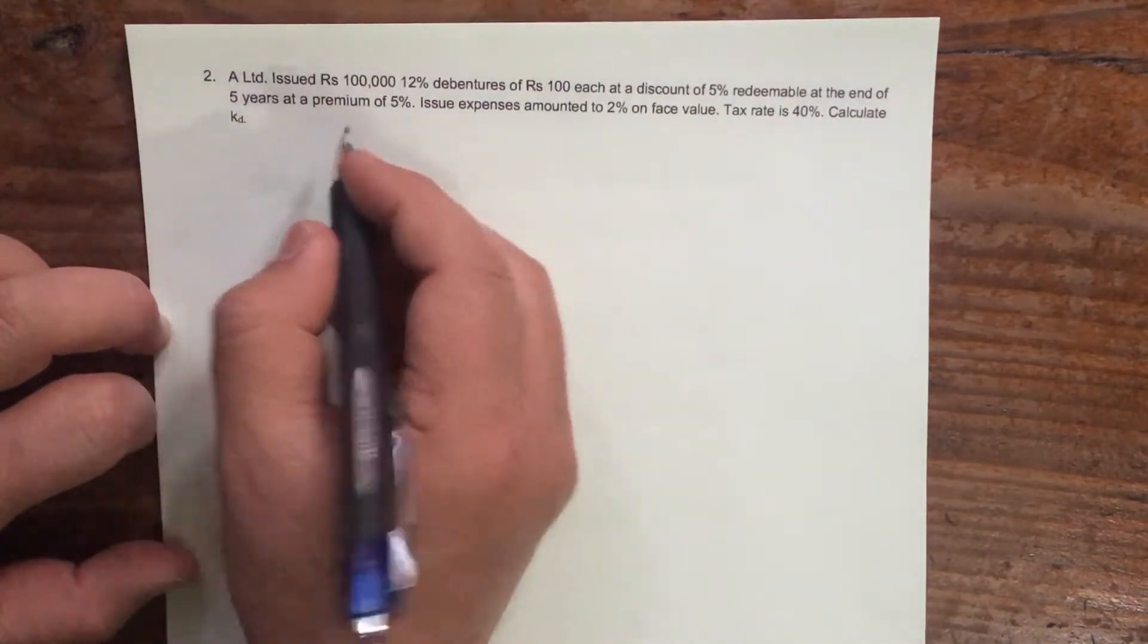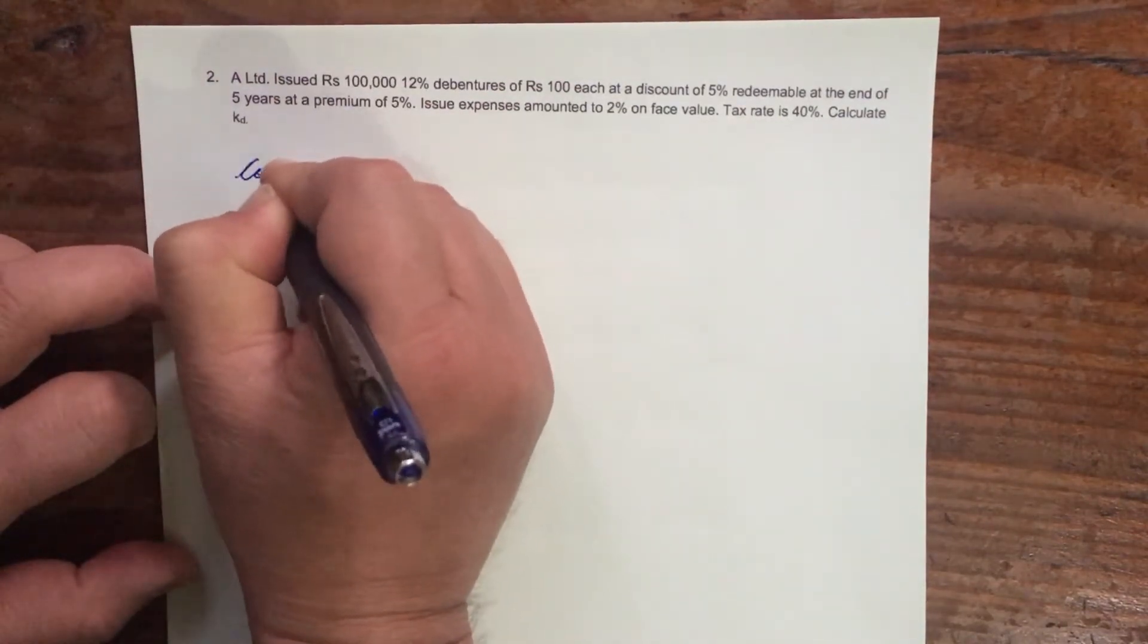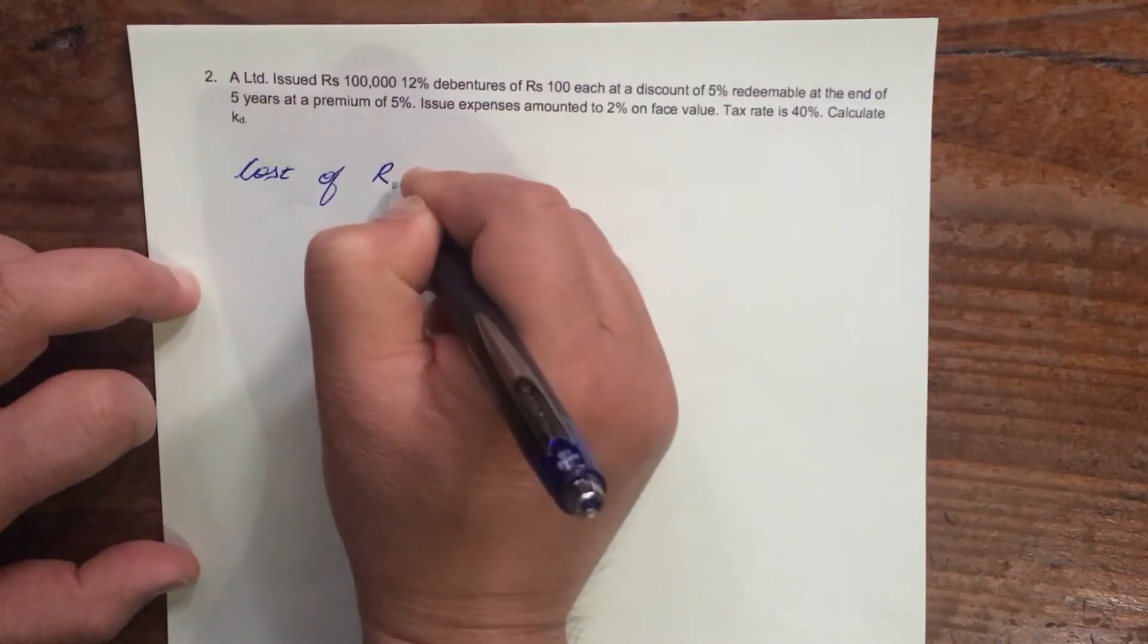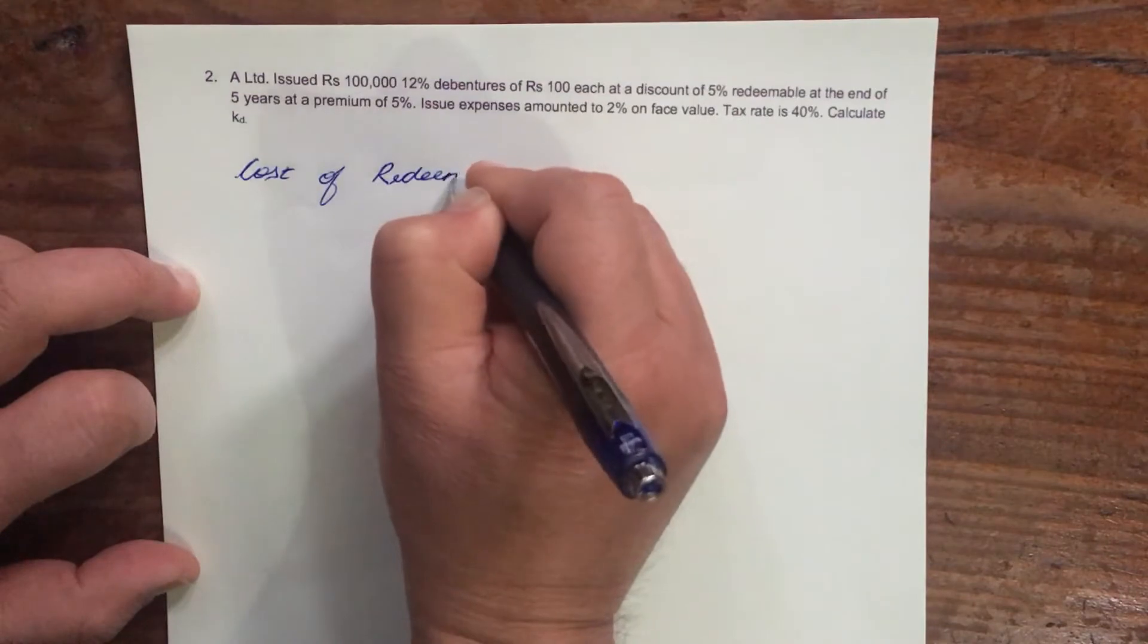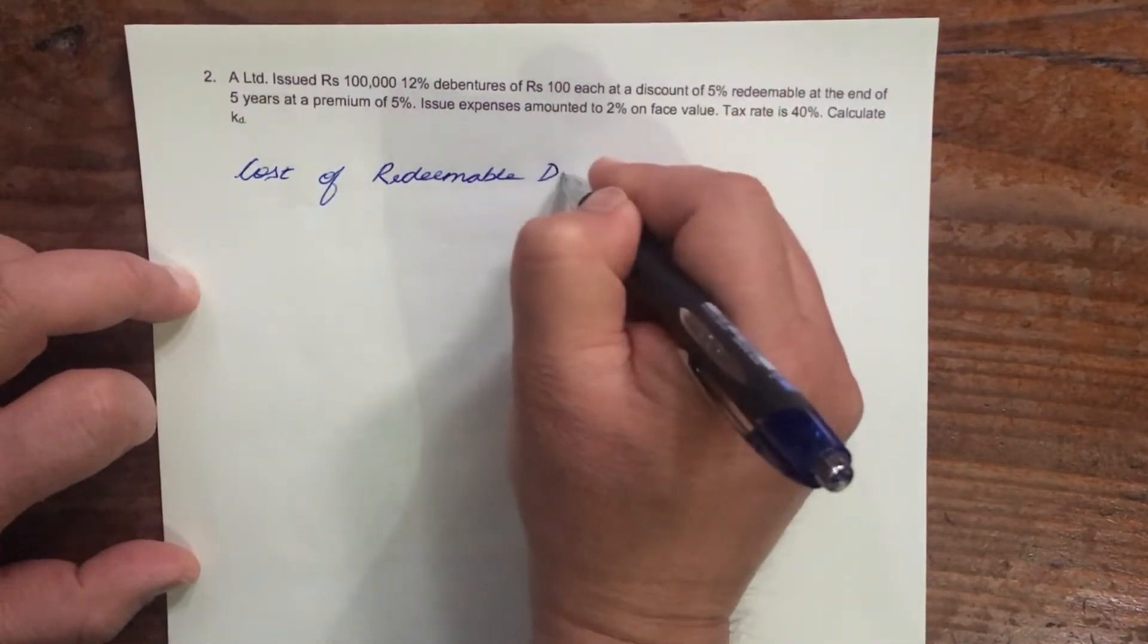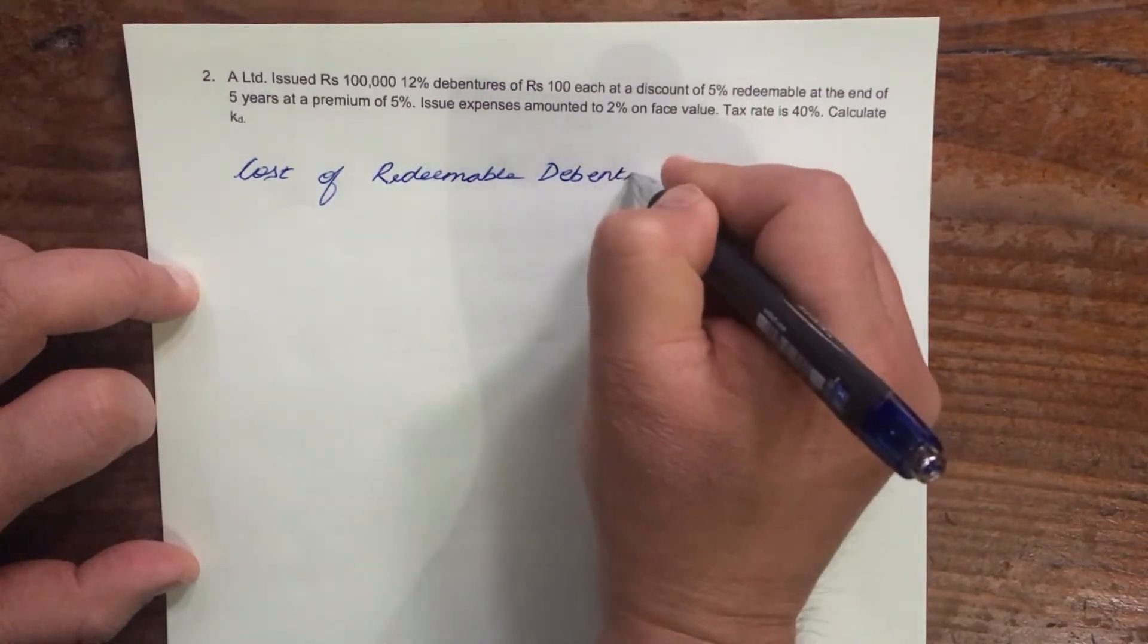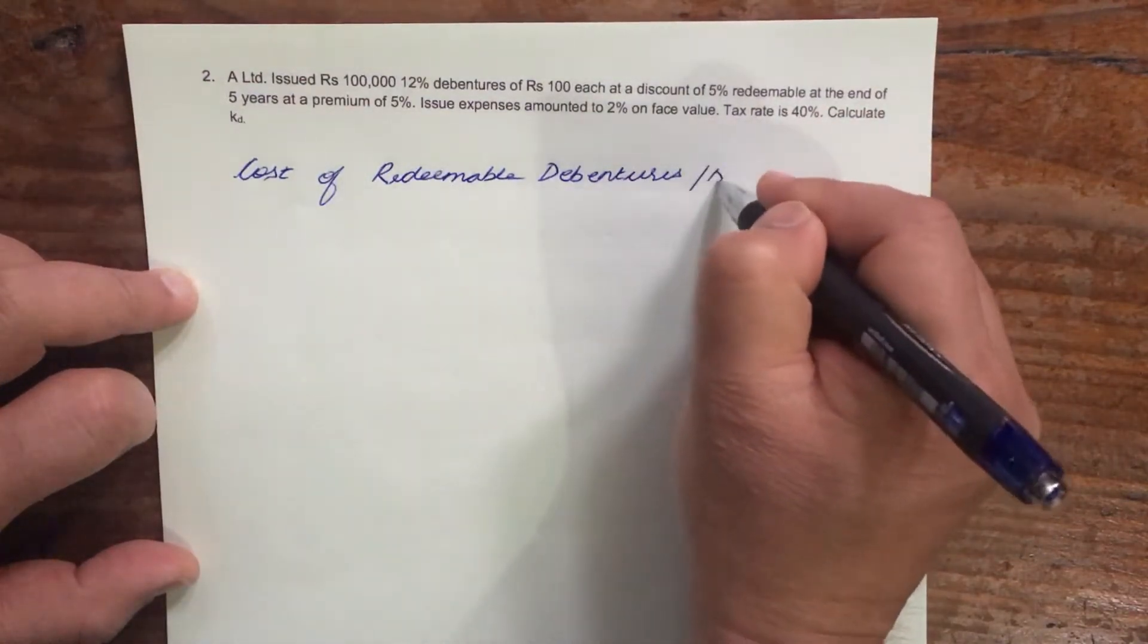So how do you find out the cost of redeemable debentures or debt? Cost of redeemable, that means you will get back your money after a certain period of time. When you invest in redeemable debentures, after a certain period of time when the debenture matures, you will get back your money.